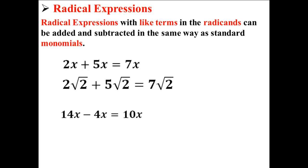Here we have another expression: 14x minus 4x is equal to 10x. This can also be shown in a similar way using radicals. 14√3 minus 4√3 is equal to 10√3.